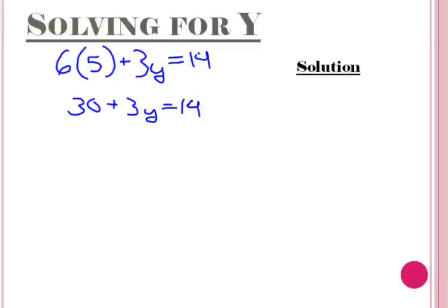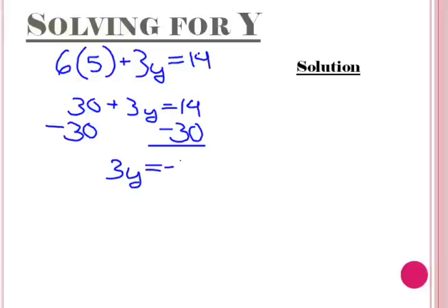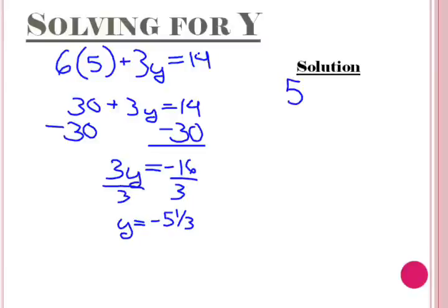Next, we need to get rid of the 30. We are going to subtract 30 from each side to get 3y equals negative 16. The last step is to divide by 3 on each side. In the end, you will get y equals negative 5 and 1 third. So our solution is (5, negative 5 and 1 third).